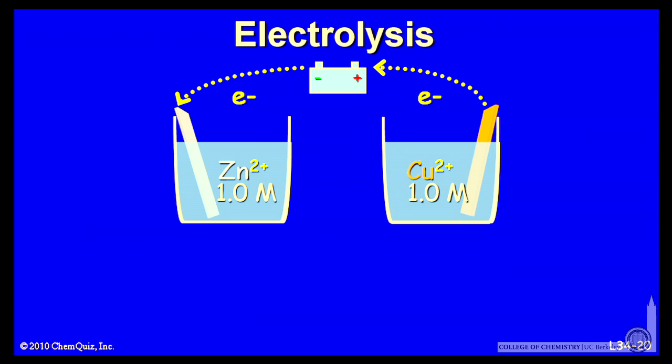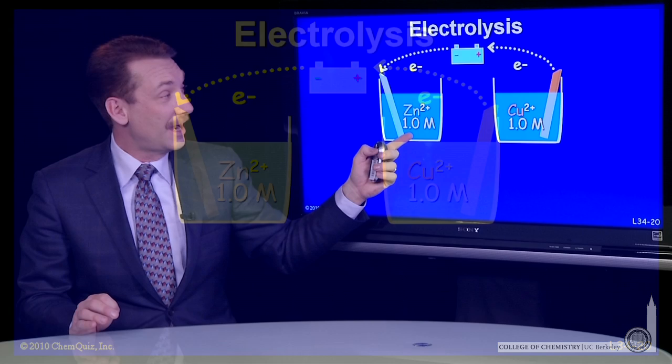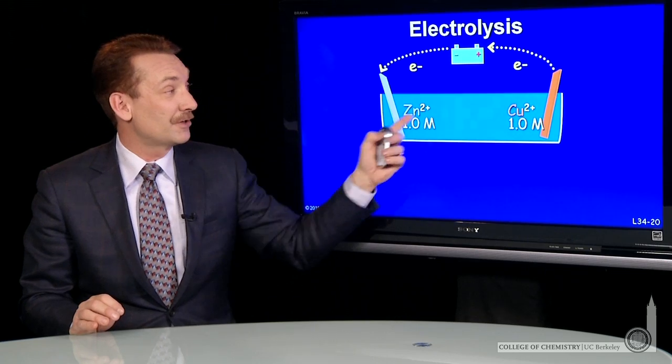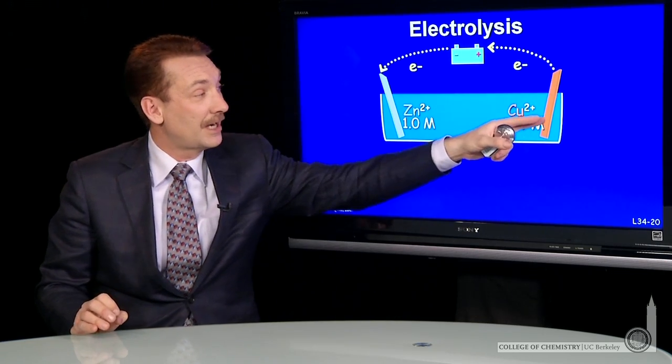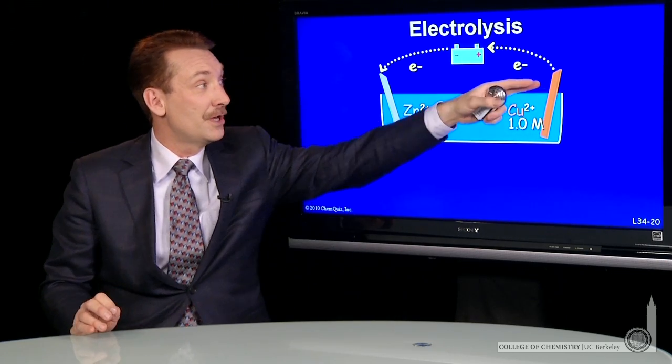When doing these electrolysis reactions, they're usually done all in one beaker. So everything is put together in one beaker: a copper electrode, a zinc electrode, connected by an external voltage.